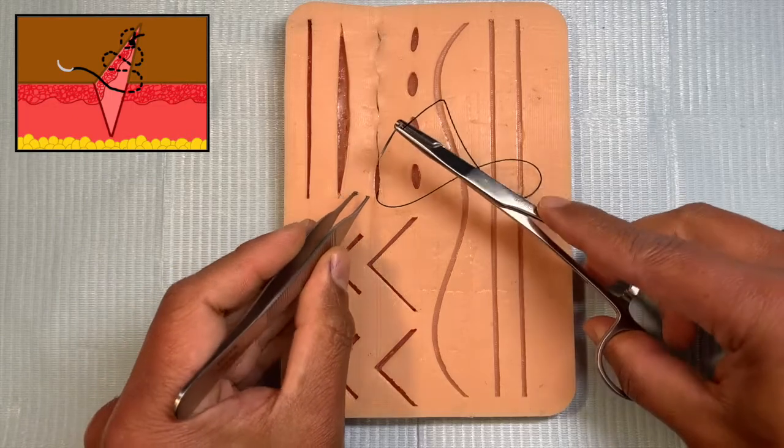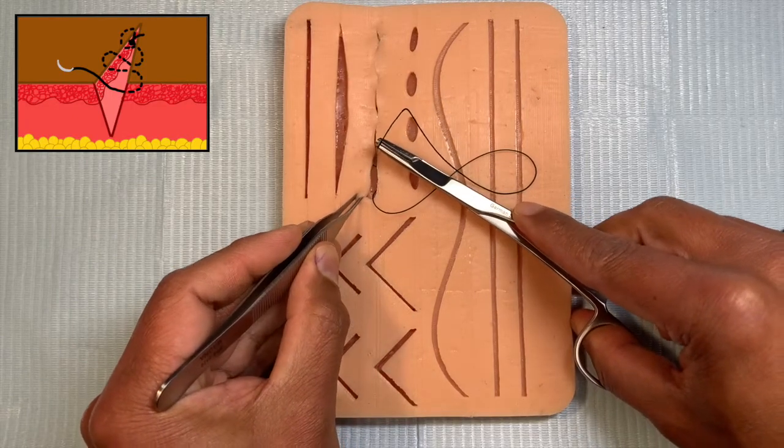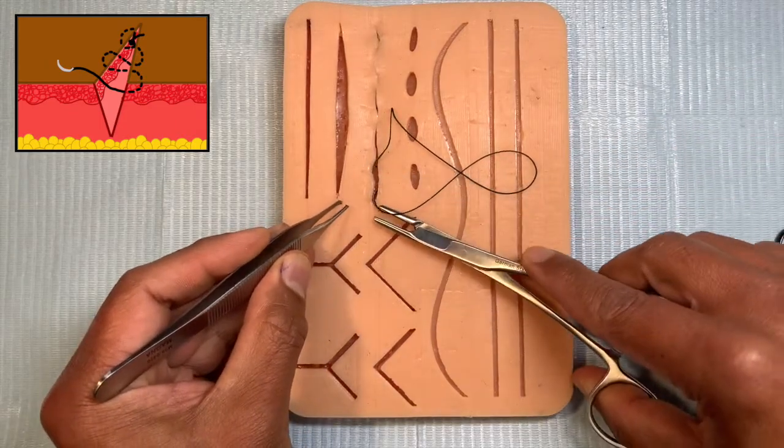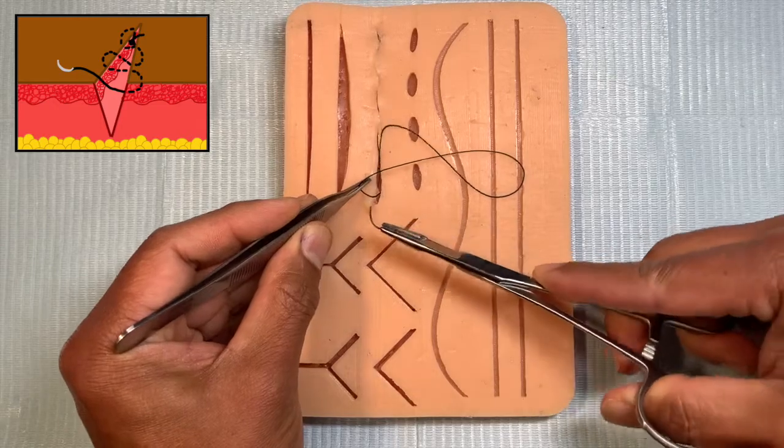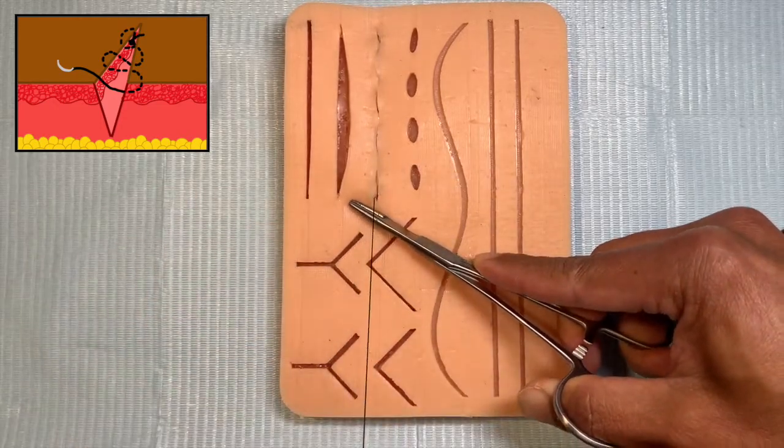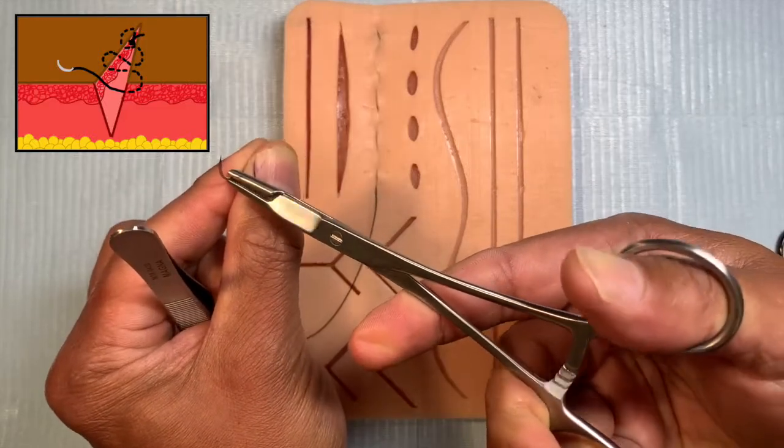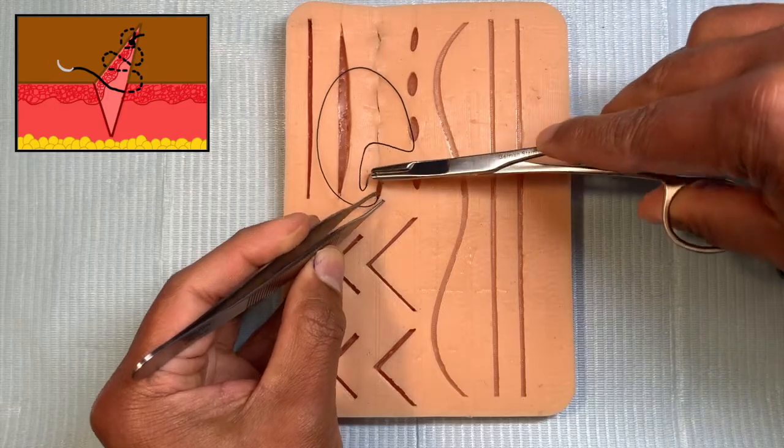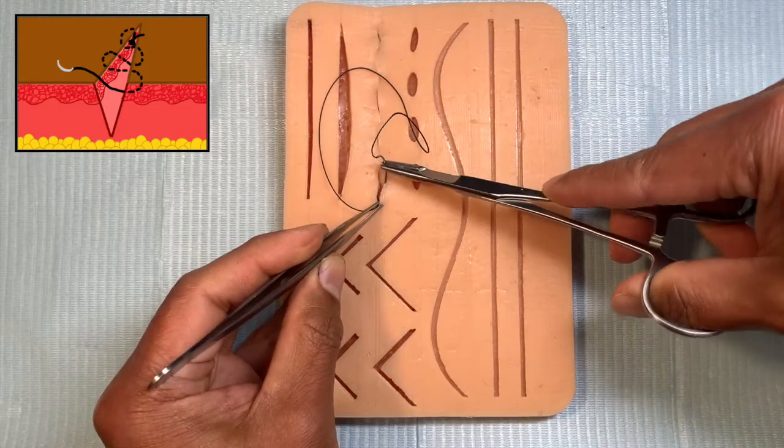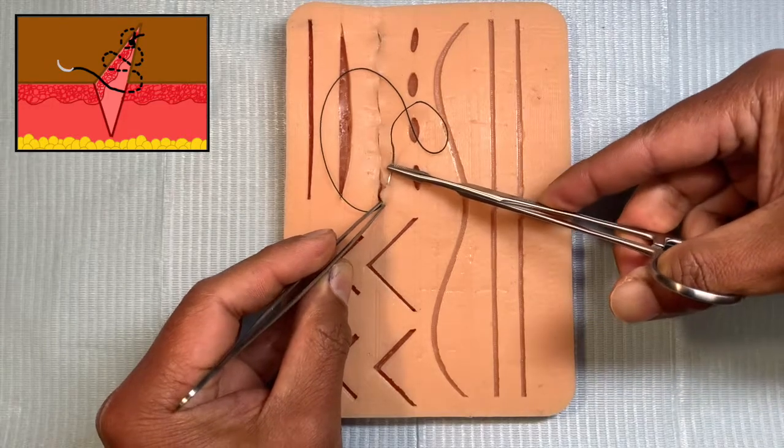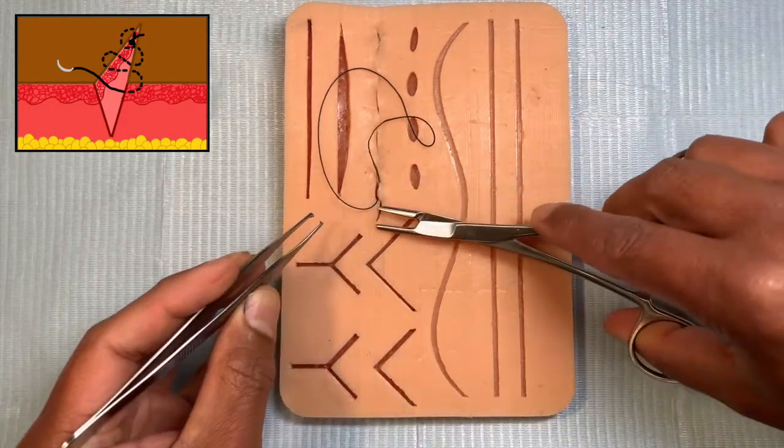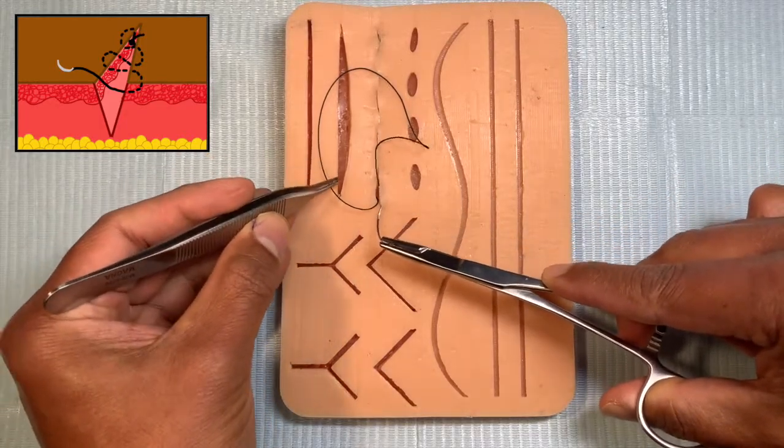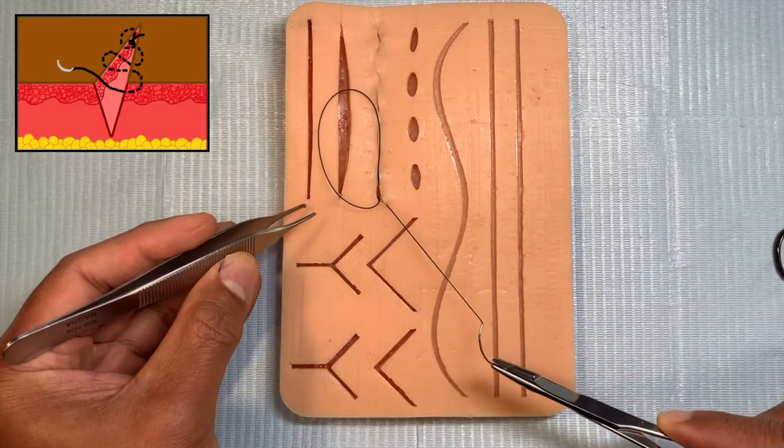We're coming to the completion of the intracuticular suture, so now we have to finish off. The technique I'm going to demonstrate is called the Aberdeen knot technique. Come up pretty close to the very end of the wound because you want to make sure everything is closed. I've taken a bite and left one end long, so now I'm wrapping the suture up.